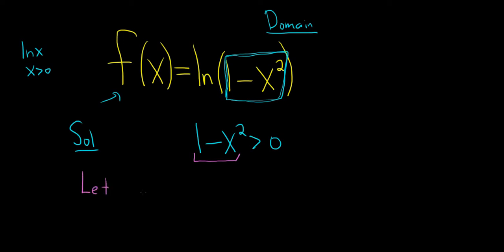And then think about its graph. This is a parabola, so we can think of it like this: negative x squared plus 1. This is an upside down parabola shifted up by 1.